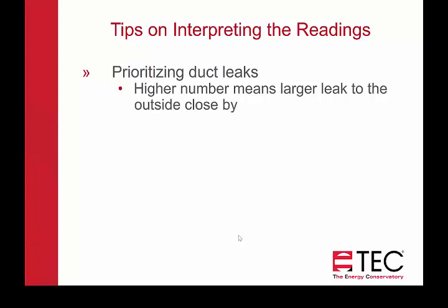Next we'll go over some tips on interpreting those readings — part of this is prioritizing which ducts you're going to go after first and which ones you're going to seal. Higher numbers means the larger leak to the outside is close by. If you get a high reading on that duct run or return system, that means you're closest to the biggest leaks in the system.